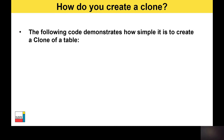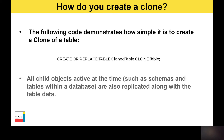How do you create one in Snowflake? The following code demonstrates how simple it is to create a clone of a table — it's just one line: CREATE OR REPLACE TABLE, give the table a clone name, use the keyword CLONE, and then specify the source object you want to clone. The syntax is the same for schemas and databases — CREATE OR REPLACE SCHEMA or CREATE OR REPLACE DATABASE. Any child objects at that level are also replicated along with the associated table data as it stands at that point in time.